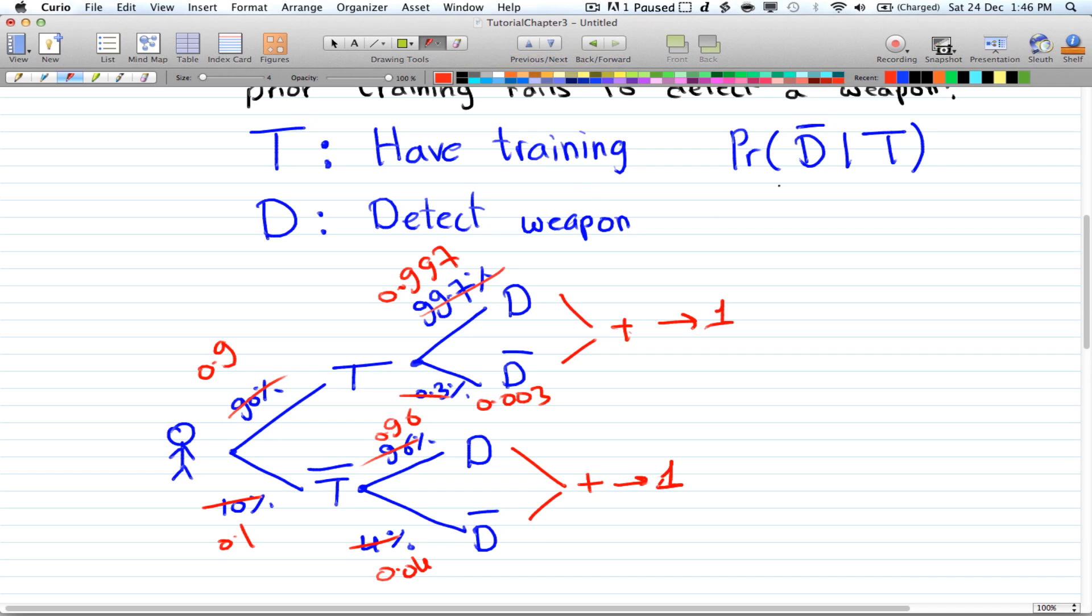All right, so now we're being asked for the probability of D', D' given A. All right, so when you're asked this, the first thing you want to do is understand the question. And what is this asking is, what is the probability that someone that fails to detect a weapon and he has training? And remember that the people that fail to detect a weapon, they can either have training or don't have training.